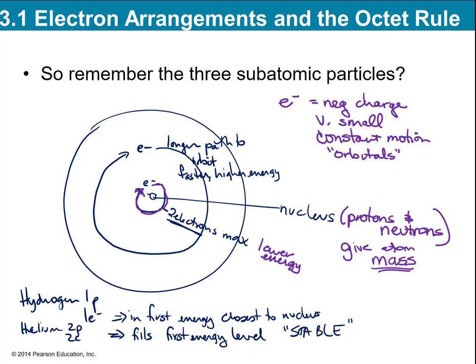Like anything else, we use the lowest amount of energy to do anything. Same with an atom — electrons want to get into the lowest possible energy level. They're not just randomly found; they start closest to the nucleus. The bigger the atom, the more electrons it has, and the more energy levels you find electrons in.